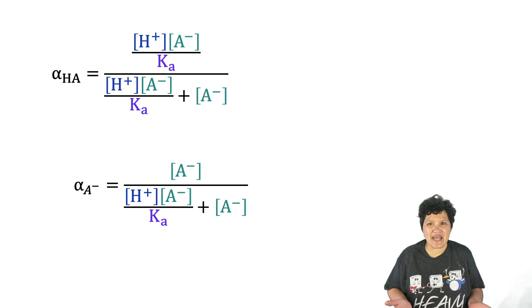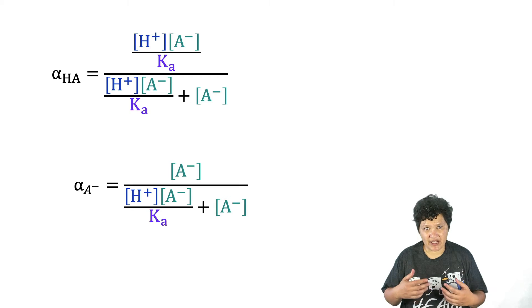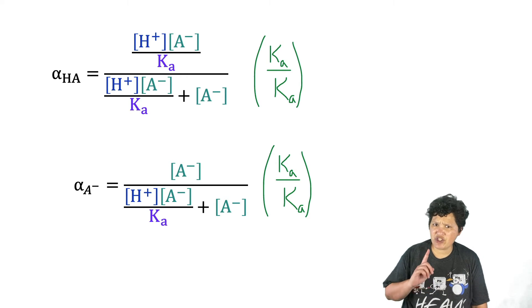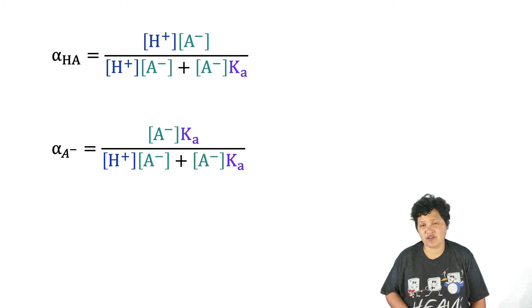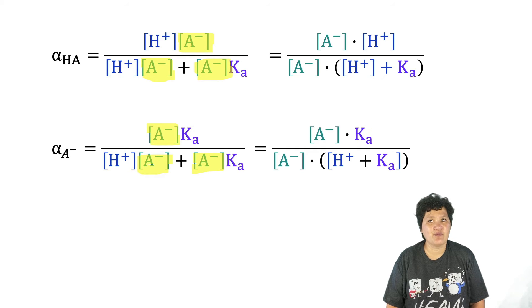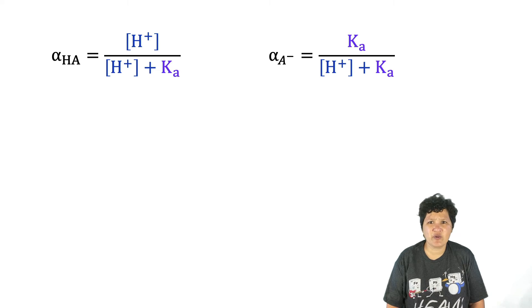Well, right now this looks like a mess. So now we're going to multiply the top and the bottom of each of our fractions by Ka. When we do that, we get these expressions, which look marginally better since we no longer have fractions within fractions. What we're going to do to simplify it further is to factor out the A- concentration in both the numerator and denominator of each fraction. And as you can see in both of our fractional composition expressions, we can cancel out the concentration of A-. So here's what we're left with.